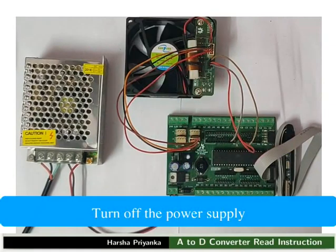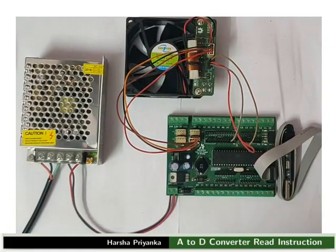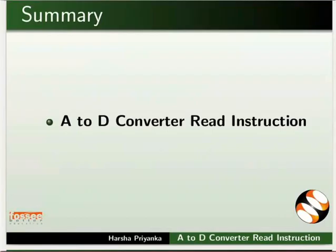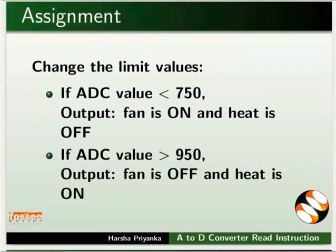Turn off the power supply. This brings us to the end of this tutorial. Let us summarize. In this tutorial, we learnt about the working of A2D Converter Read instruction. As an assignment, change the limit values and repeat the experiment. If ADC value is less than 750, the fan should turn on and the heating element should turn off. If ADC value is greater than 950, the fan should turn off and the heating element should turn on.